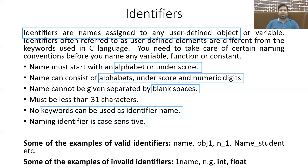Those are the six rules you must follow while naming any identifier. Some legal identifier names are: NAME — starts with an alphabet and includes only alphabets; OBJ1 — consists of alphabets and a numeric digit starting with an alphabet; N_1 — includes an alphabet, an underscore, and a digit. All these are legal.